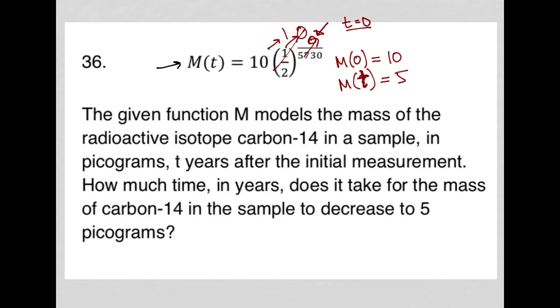So what I'm going to do is I am going to replace M of t with five. I know that I want my M of t to be five. So I'm going to say five equals 10 times one half to the t over 5730.